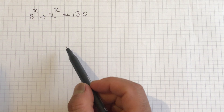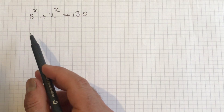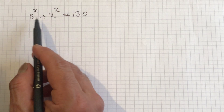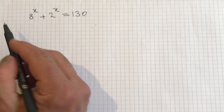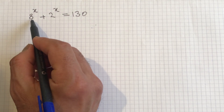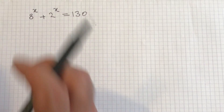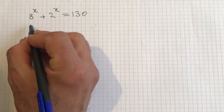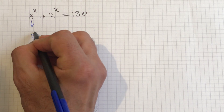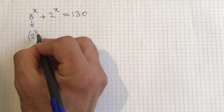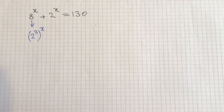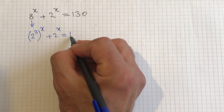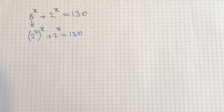Hello everyone. For this exponential problem, you can see here I have a plus sign between these two exponential terms. The left number is 8 and the right is 2, and they have a connection because 8 is 2 to the power of 3. So I can write it as 2 to the power of 3, raised to another power x, plus 2 to the power of x, equals 130.